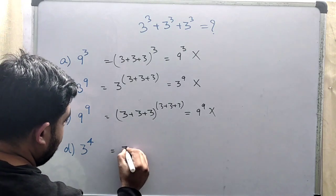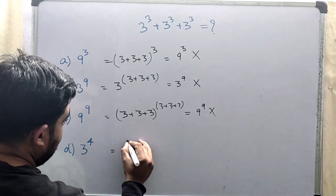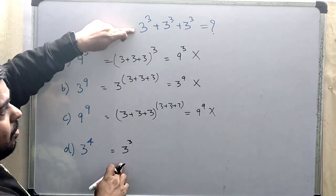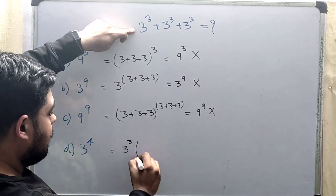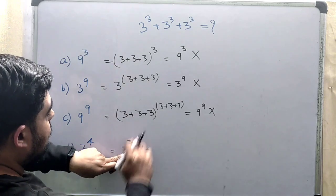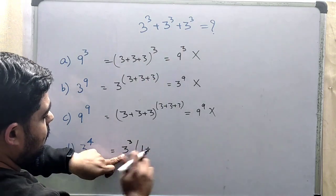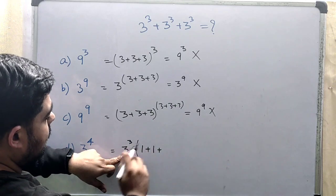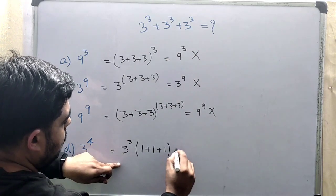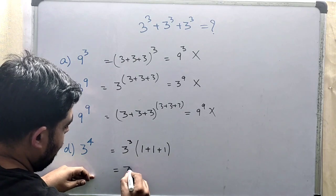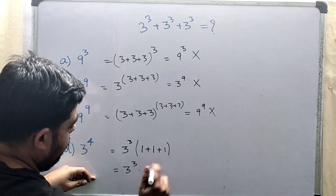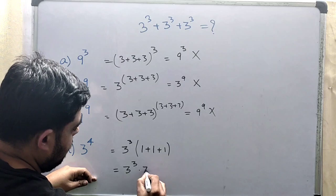This will come 3 to the power 3. We are taking 3 to the power 3 as common. So this will come 3 to the power 3 multiplied by — from each term this equals 1 — giving us 3 to the power 3 into 1 plus 1 plus 1, which equals 3 to the power 3 into 3.